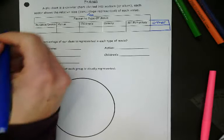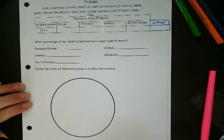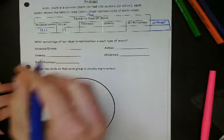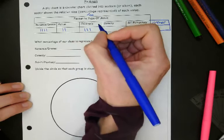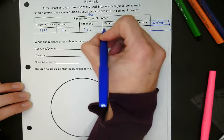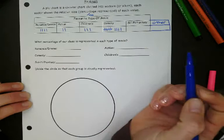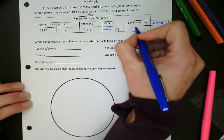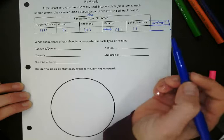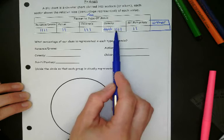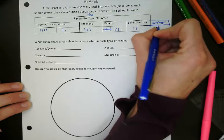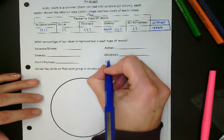So romance or drama, I'm going to say that four of you said you like romance or drama. I'm going to say that two said action. I'm going to say that in children's, we had three. Comedy, we had nine. Sci-fi fantasy, let's say we had two. And then, so let's see how many students do I have all together. Four, five, six, seven, eight, nine, 10, 11, 12, 13, 18, 20. So let's do five just to make it nice and easy for us. That said they like movies in other categories. So I'm going to add other down here.